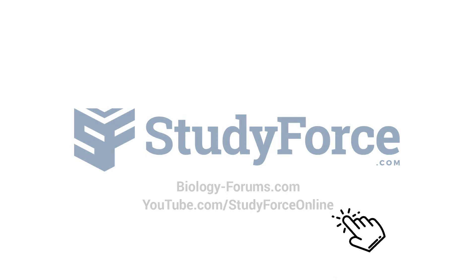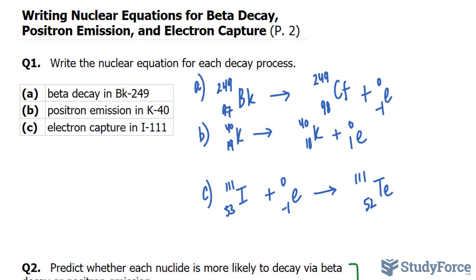Welcome back everyone to part two of this lesson where we learn how to write nuclear equations for beta decay, positron emission, and electron capture.